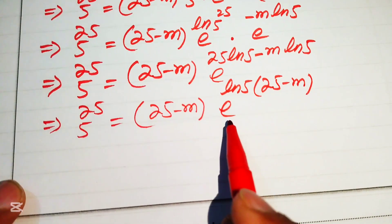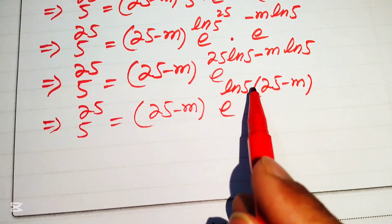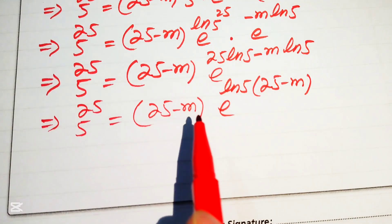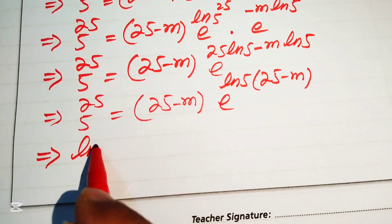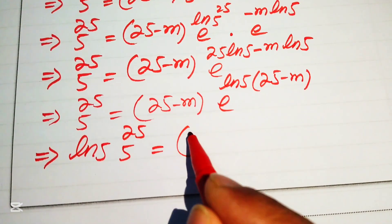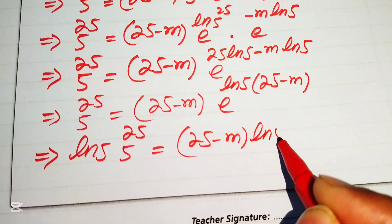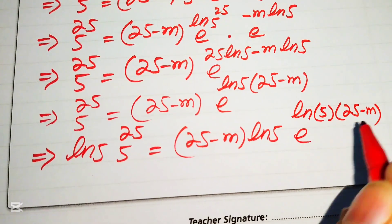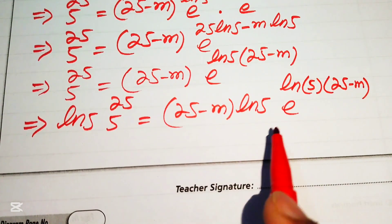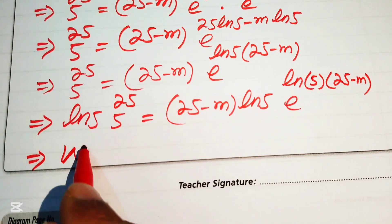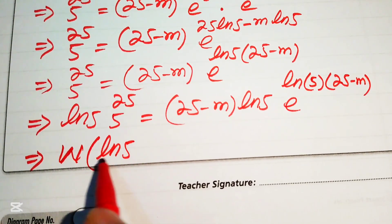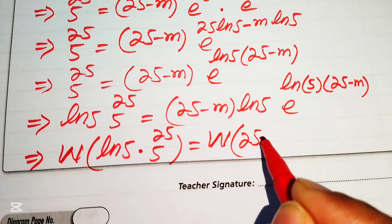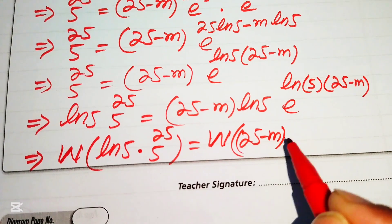Now the exponent of e is log5·(25−m), which is also the factor multiplying e. We need the coefficient to also be (25−m)·log5, so we multiply both sides by log 5. This gives: log5 · 5^25 equals (25−m)·log5 · e^(log5·(25−m)). Now we are ready to apply the Lambert W function.